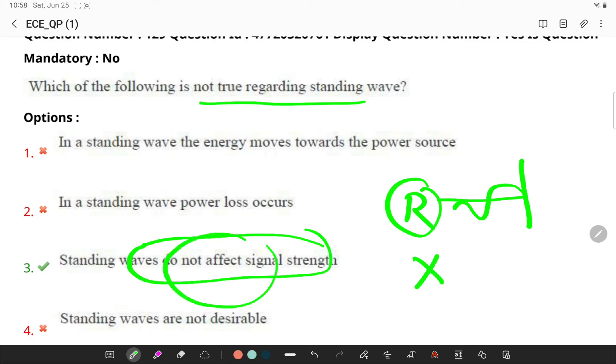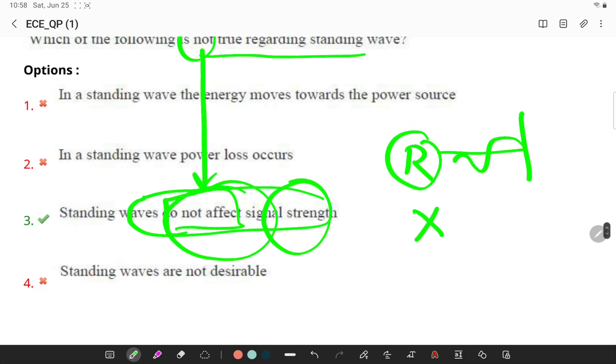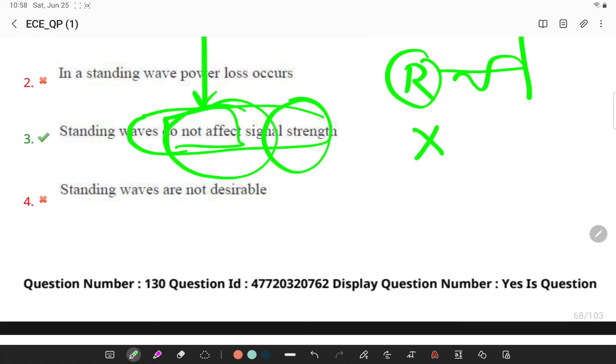But here, the option is given as which is not true. So here, he is saying that there is no effect, but generally, this will be affecting the strength of the signal.